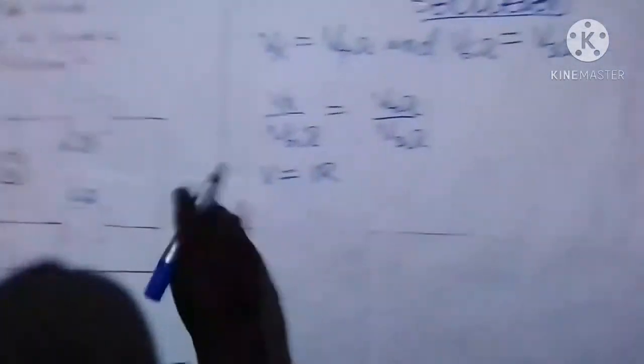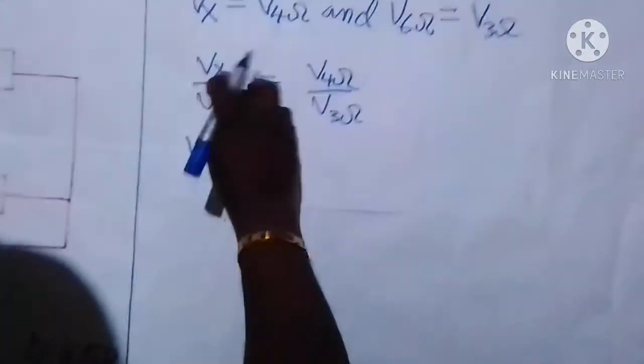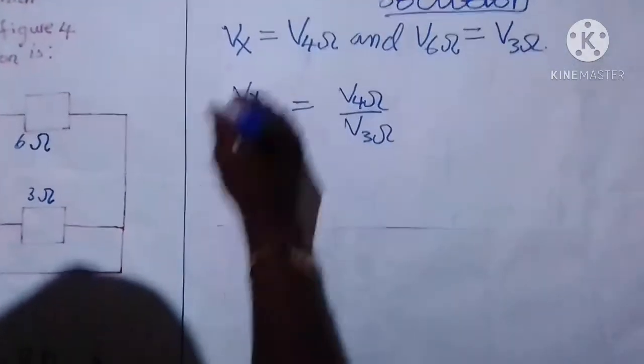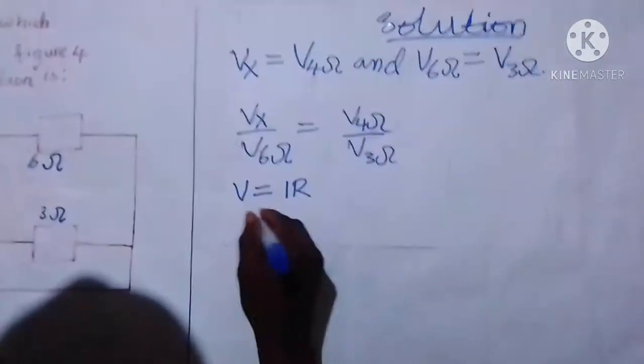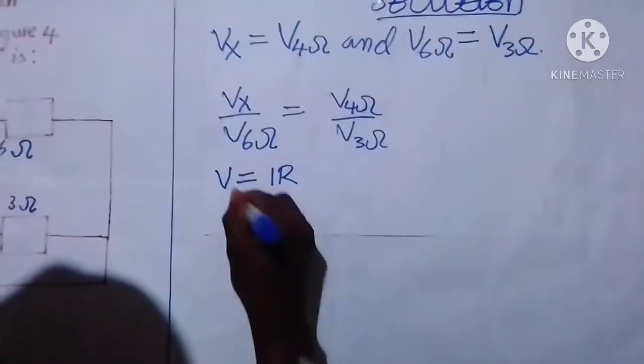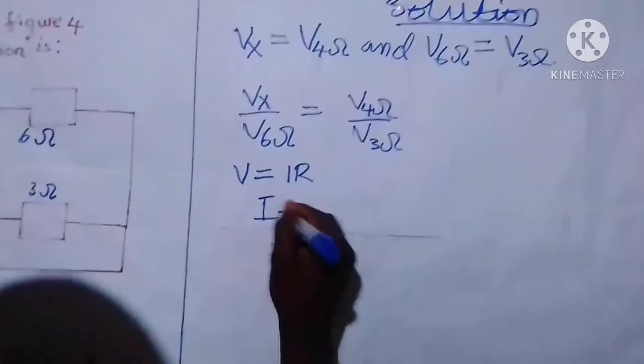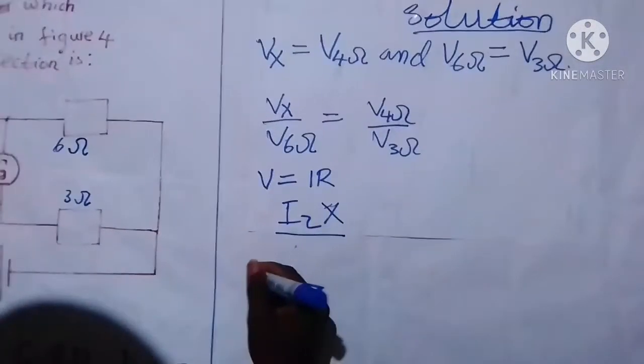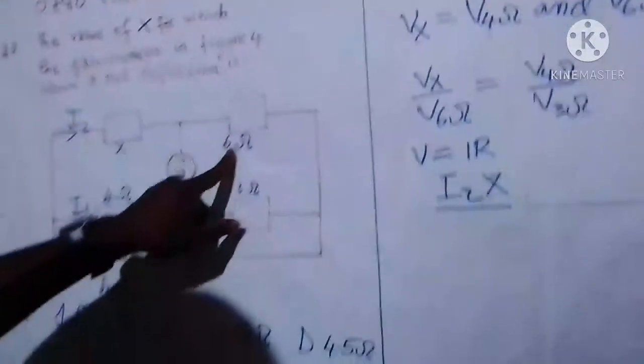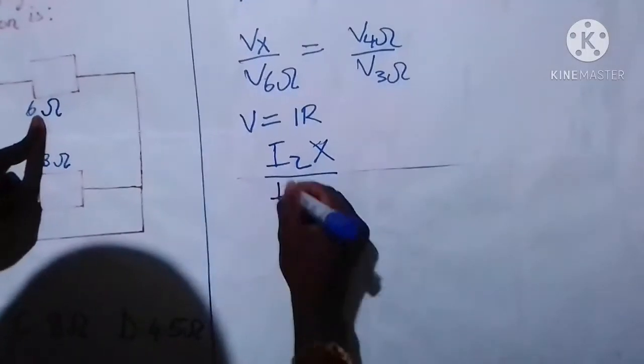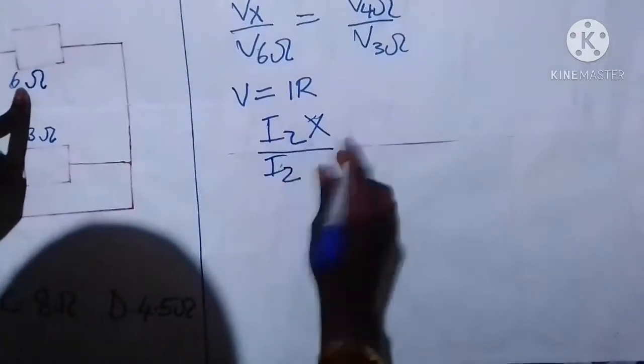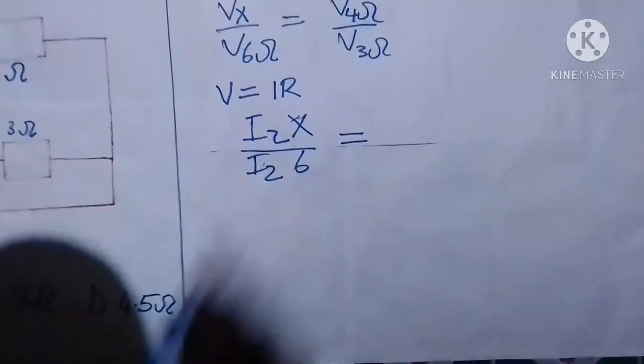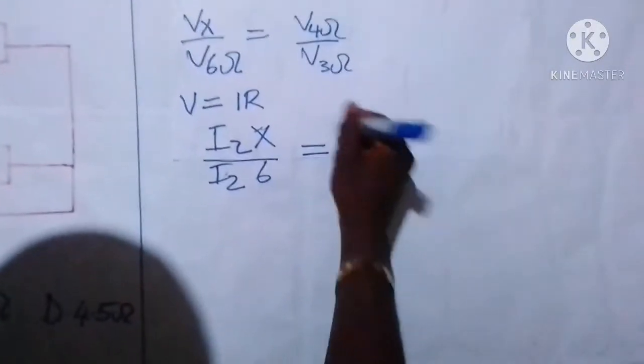Now we can translate V into IR in each case and see what we are going to have. So in the first case we are going to have I2 times X divided by I2 times 6 ohms, and this is equal to I1 times 4 ohms divided by I1 times 3 ohms.